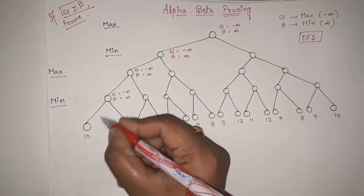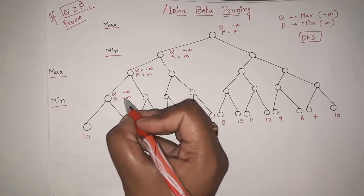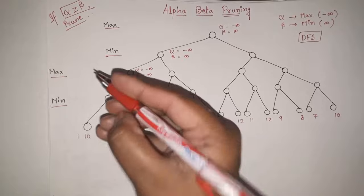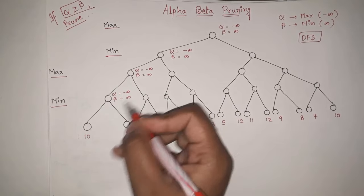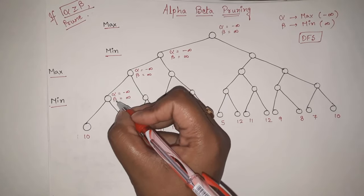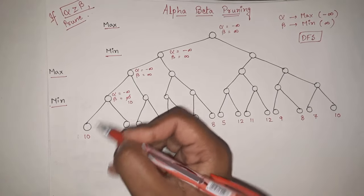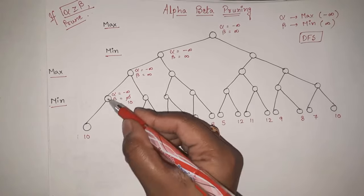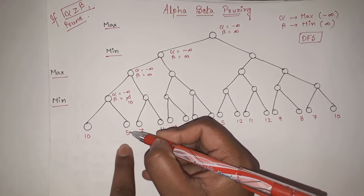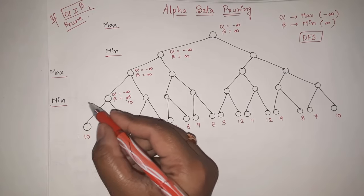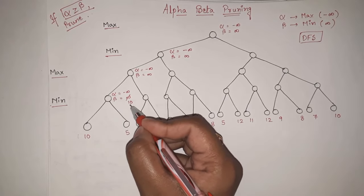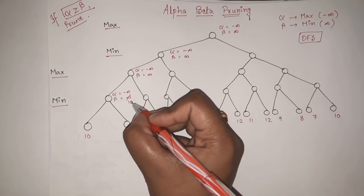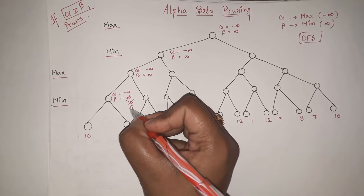After going deeper, we are at the min node. We can only update the beta value. Beta value equals infinity currently. We have to update with the minimum value. Out of infinity and 10, the minimum value is 10, so beta is updated to 10. After this node we go to the next leaf, which is 5. Out of 10 and 5, the minimum is 5. So beta is updated again to 5.